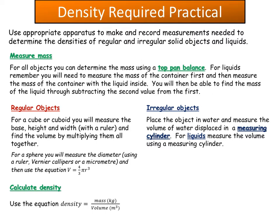When measuring volume, the method depends on the object. For regular objects such as cubes or cuboids, you can use an equation. You measure the sides — base, height, and width — using a ruler, then find the volume by multiplying all of those together.